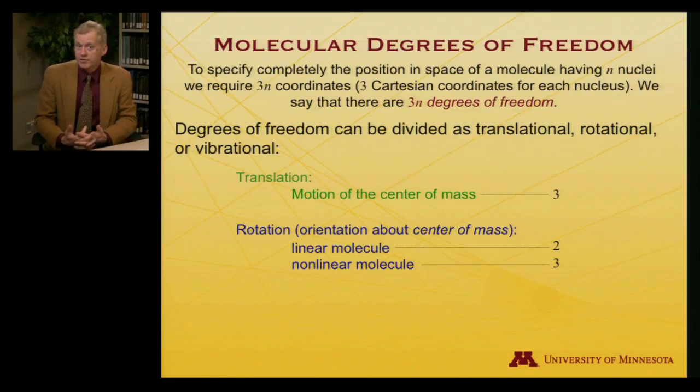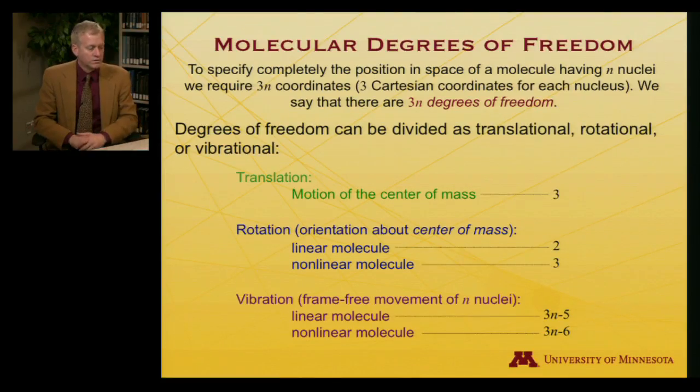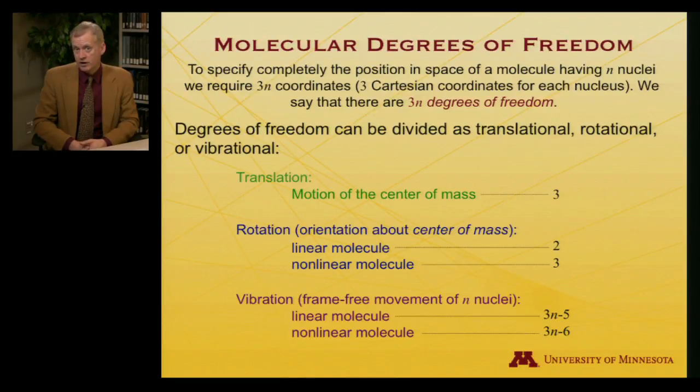Once you go to three or more atoms, the molecule could be linear — there are examples of linear molecules with more than two atoms, in which case there are still only two rotational degrees of freedom. But once the molecule is non-linear, you can rotate about any of the Cartesian axes, so that gives three degrees of freedom. All that's left, then, is vibrations.